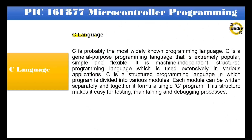C is probably the most widely known programming language. C is a general-purpose programming language that is extremely popular, simple, and flexible. It is machine-independent, a structured programming language which is used extensively in various applications.